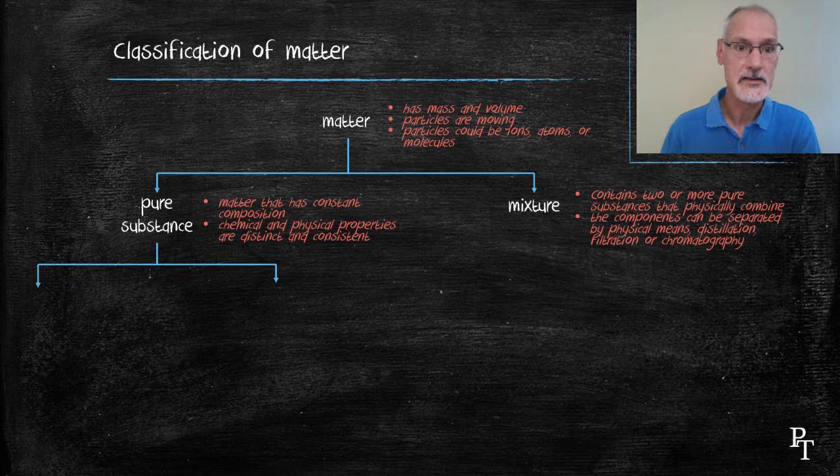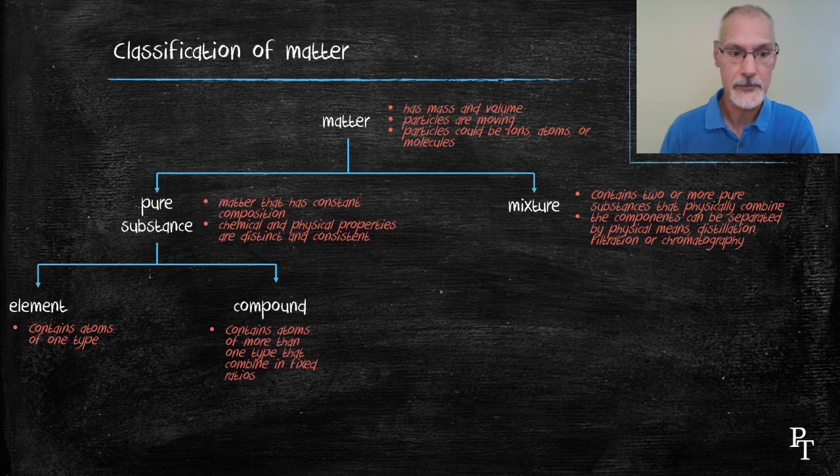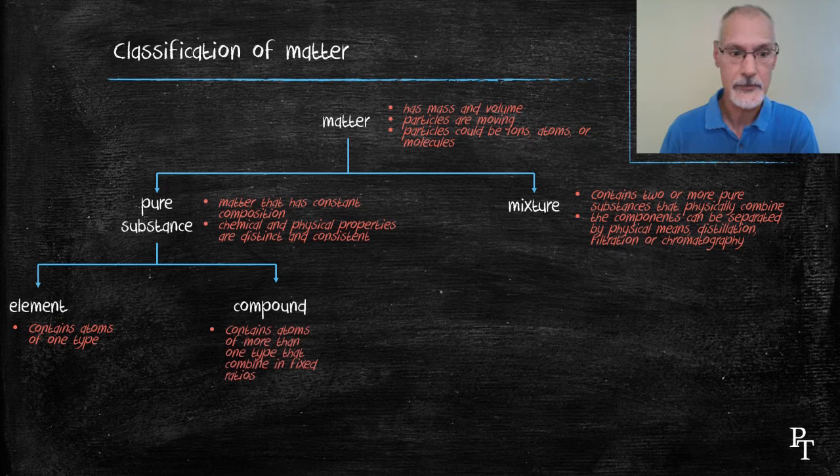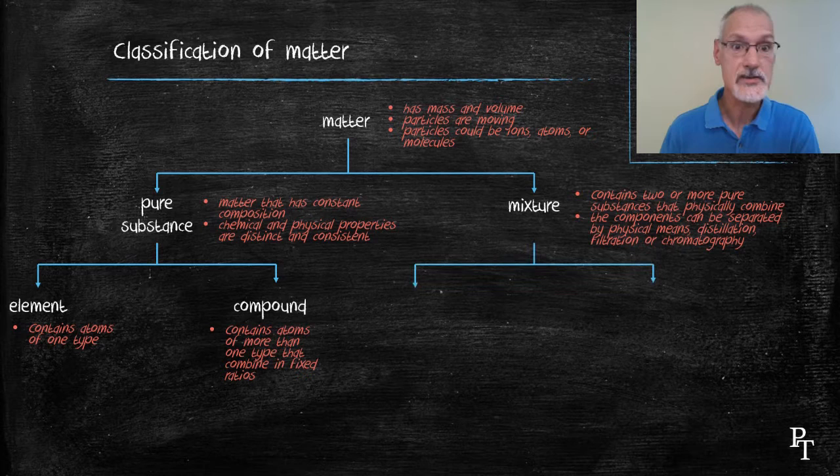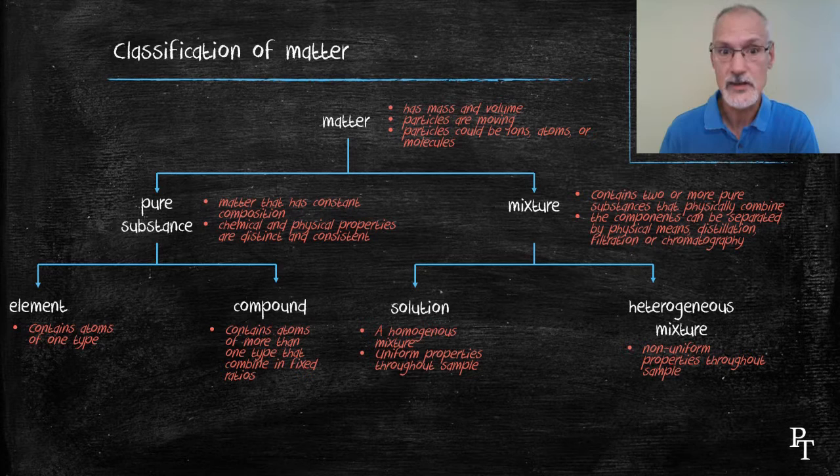If you return back to pure substances, they can be further broken down into elements and compounds. Elements essentially contain only one type of atom, whereas compounds contain a fixed ratio of different types of atoms. Moving on to mixtures, we can have homogeneous mixtures, which we call solutions. They have uniform properties throughout the sample, meaning a sample from the top and the bottom would possess the same properties. A heterogeneous mixture doesn't share this. It would have non-uniform properties that could vary from top to bottom or left to right within the sample itself.